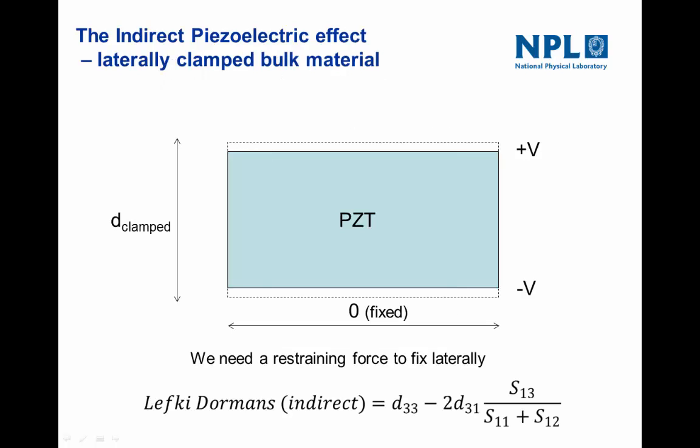In the previous case we had the PZT floating in mid-space not attached to anything. Now let's say we fix it in the lateral direction so it can't move at all, and we apply a voltage to it. The material will now expand in the thickness direction, but because we've fixed it laterally it's not going to move in that direction, meaning the movement in the thickness direction — which was previously D33 — has now been reduced. Some calculations show how much it's reduced, given by the equation at the bottom, where D33 is reduced by an amount which depends on D31 and S13.